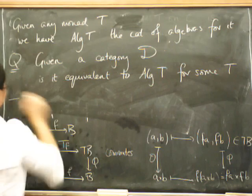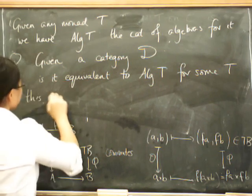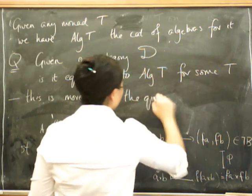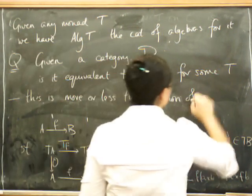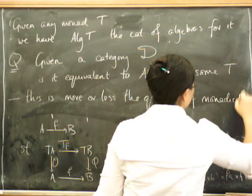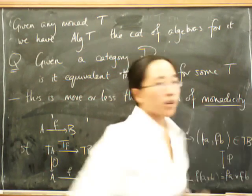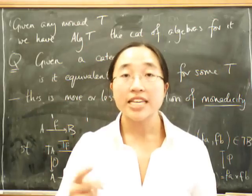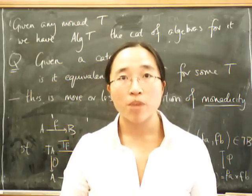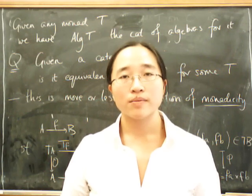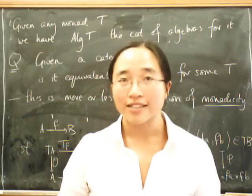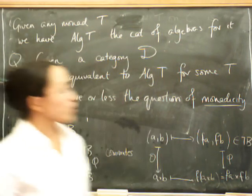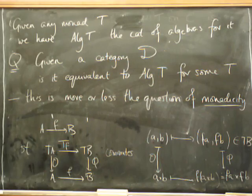But the question is still a good one. And that is the question of monadicity. So this is the question. This is more or less the question of monadicity. So a category D is called monadic over a category C if D can be expressed as a category of algebras for a monad on category C. And we'll talk more about monadicity later. Because it probably has to come after we talk about adjunctions. But anyway, that's all about the category of algebras for now. Thank you.